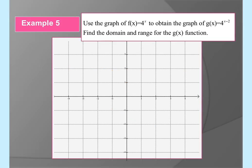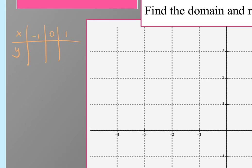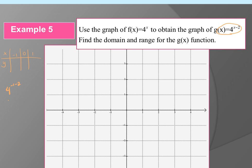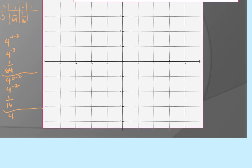Example 5: instead of doing shifts, we'll go directly to the graph. The function has x − 2 in the exponent, which is a shift right two, but we'll plug in points. Plugging in x = −1, 0, 1: we get 4^(−3) = 1/64, 4^(−2) = 1/16, and 4^(−1) = 1/4.